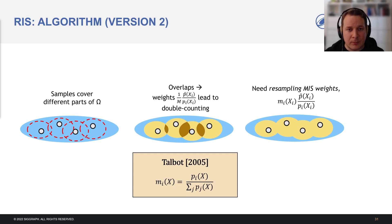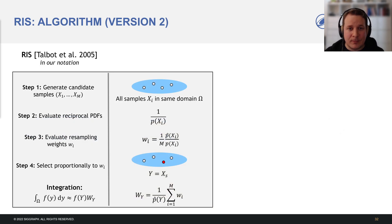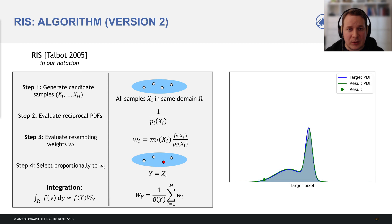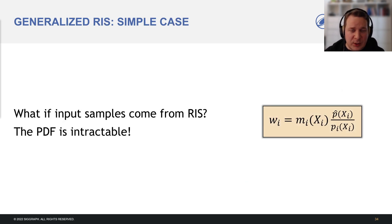The PDFs can now vary per sample. We must replace the 1-over-M weights with MIS weights. Nothing else changes. When we include the MIS weights, the PDF becomes much better. More samples would make it even better. But what if the input samples come from resampling, like in ReSTIR? We don't know the PDFs. When we integrate with resampling, we don't divide F by P — we don't even know P.